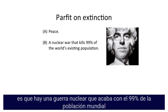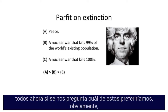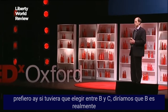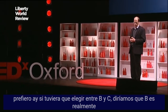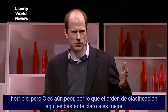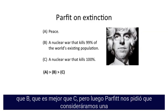Another scenario is that there is a nuclear war that kills 99% of the world's existing population. And the third scenario is that there is a nuclear war that kills everybody. If we are asked which one we would prefer, obviously we prefer A. And if we had to choose between B and C, we would say B is really horrible, but C is even worse. So the rank order is pretty clear: A is better than B, which is better than C.